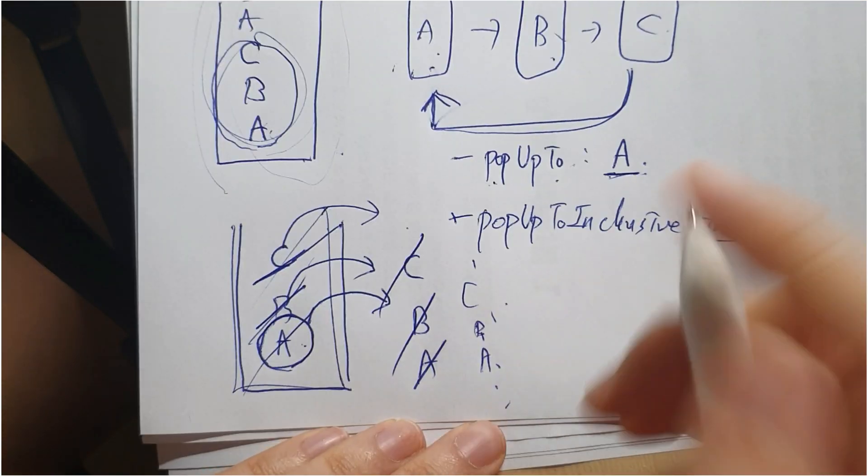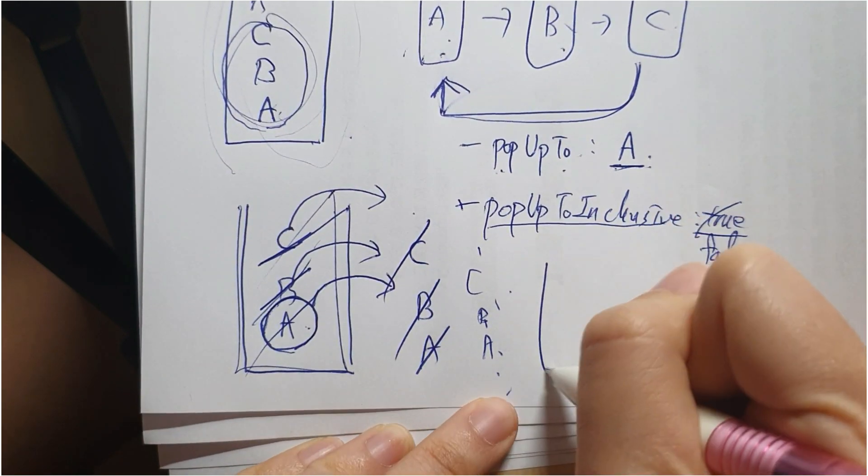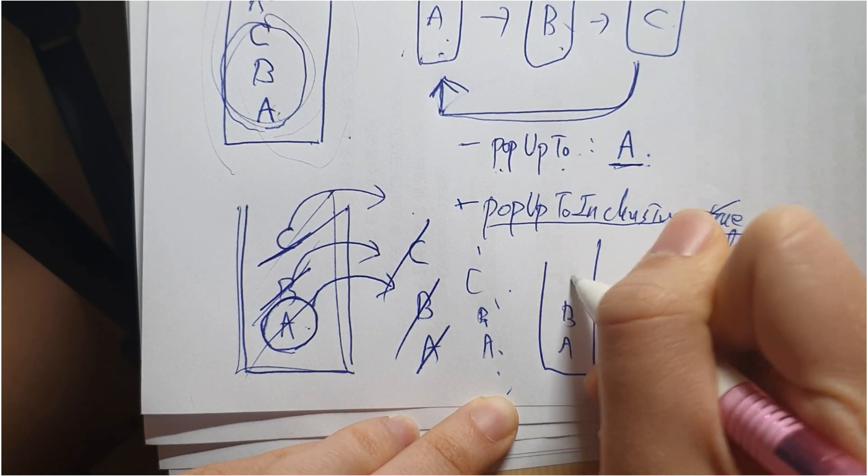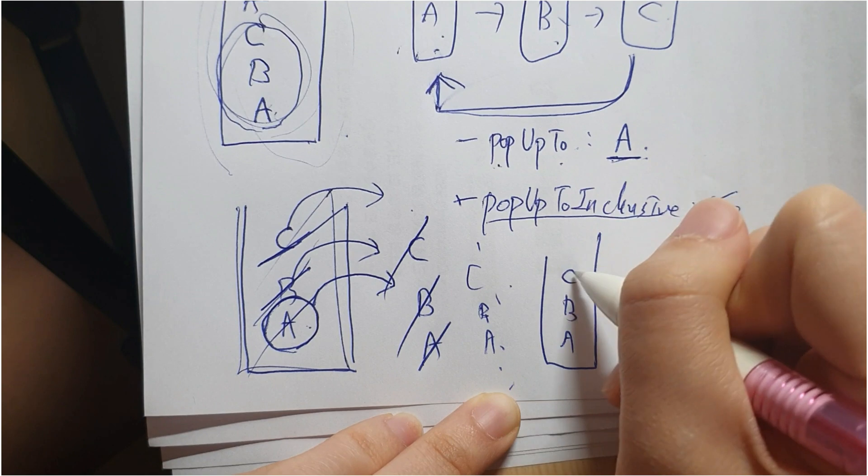It's going to be like this. So A, B, C again, but we pop up to A, right? So pop the C and pop the B.